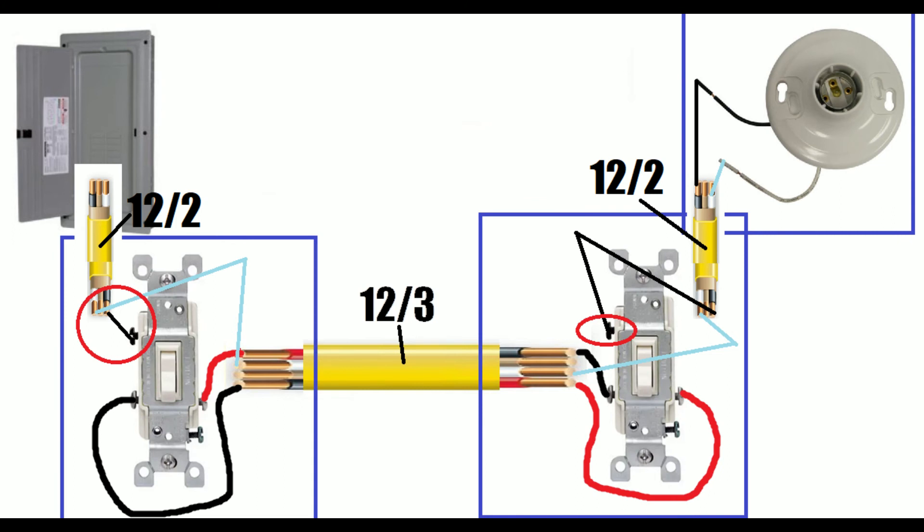Just remember the black screws. One of them goes to the constant hot or the power or the original power source that's not switched, and the other black screw goes to your load. Pretty simple.